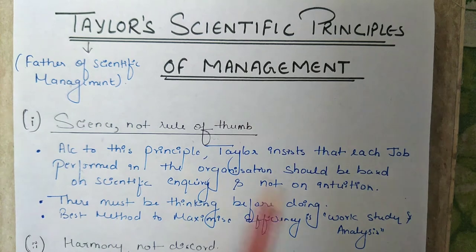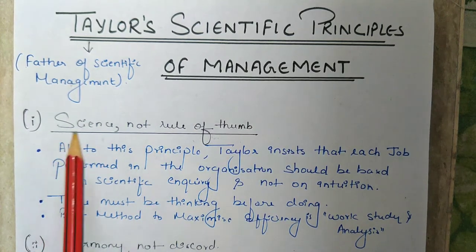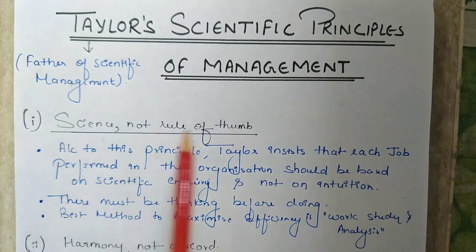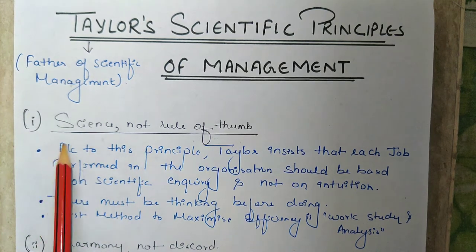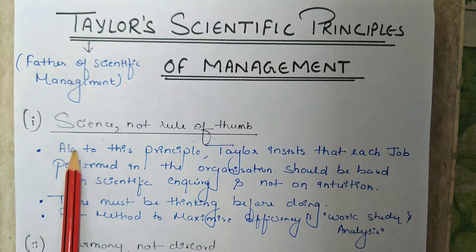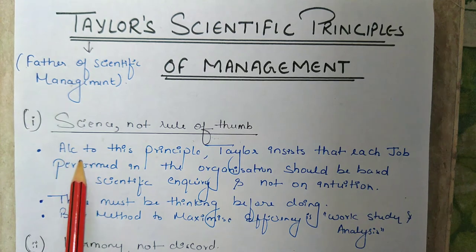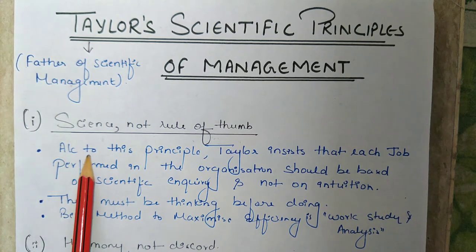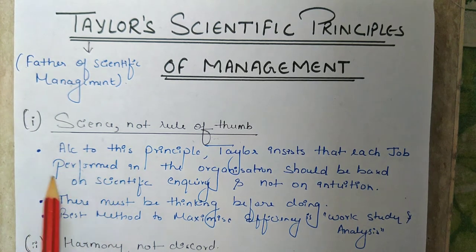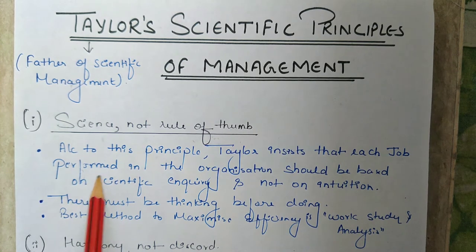We will start with the first principle which is science not rule of thumb. Now what is science? Science is something where principles are derived from observation and experimentation. Management is also a science as management principles are also derived from observation and experimentation.